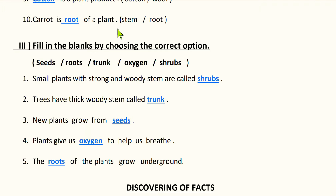Next bit: fill in the blanks by choosing the correct option. Five options are given: seeds, roots, trunk, oxygen, and shrubs. Using these options we have to fill the blanks. First question: small plants with strong and woody stem are called shrubs. Shrubs are small plants which have branches but the branches are very close to the ground.